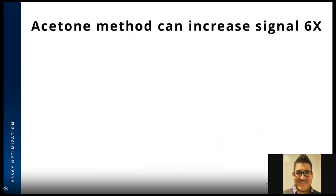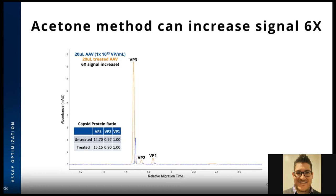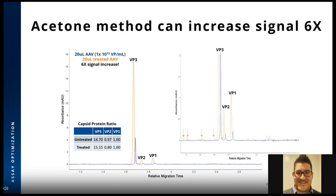The acetone precipitation method can increase signal six-fold without adjustment of sample volume. Shown here is an AAV9 sample: directly analyzed versus processed through the workflow — there is a 6x increase in signal across the three capsid proteins. If you're only looking at AAV capsid ratio, you don't need to precipitate your sample and can get your answer directly. However, if you're looking for impurities, the precipitation approach affords better detection of lower molecular weight impurities as well as the AAV genome.